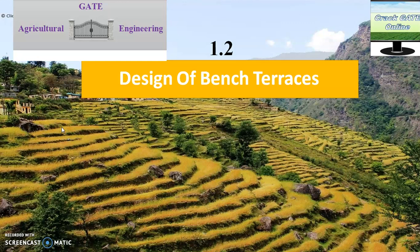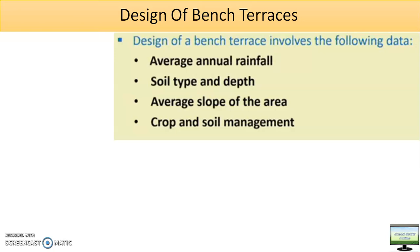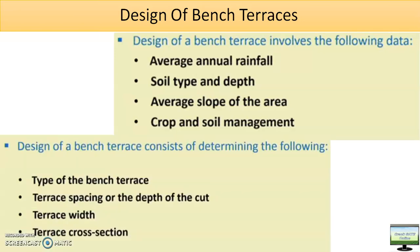For designing, first of all you need to know the climatic parameters, from where you will come to know about the rainfall. Then you need to know about the soil parameters: soil permeability, soil depth, type of soil. After that you need to know about the land slope — percentage of land slope and the length of land slope. Based on this you will decide what type of bench terrace to make in that particular area.